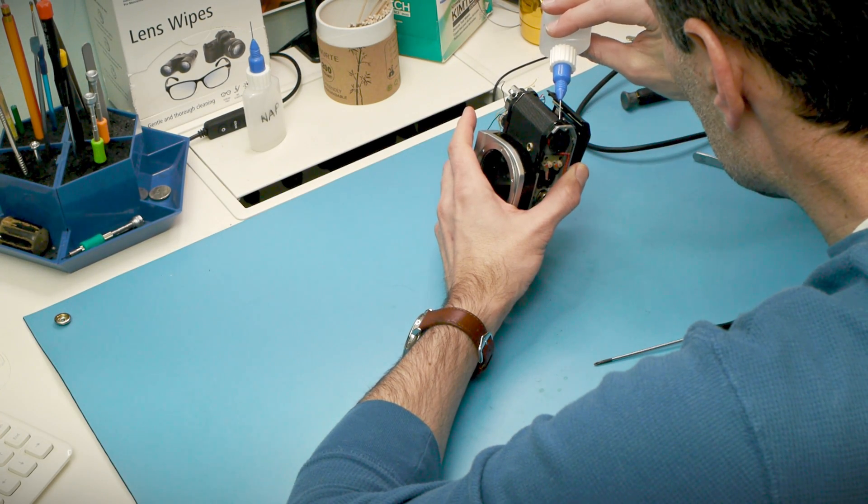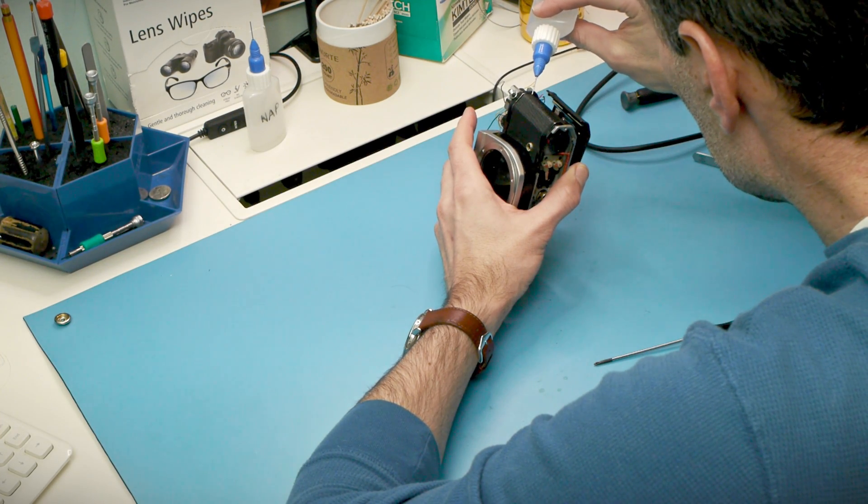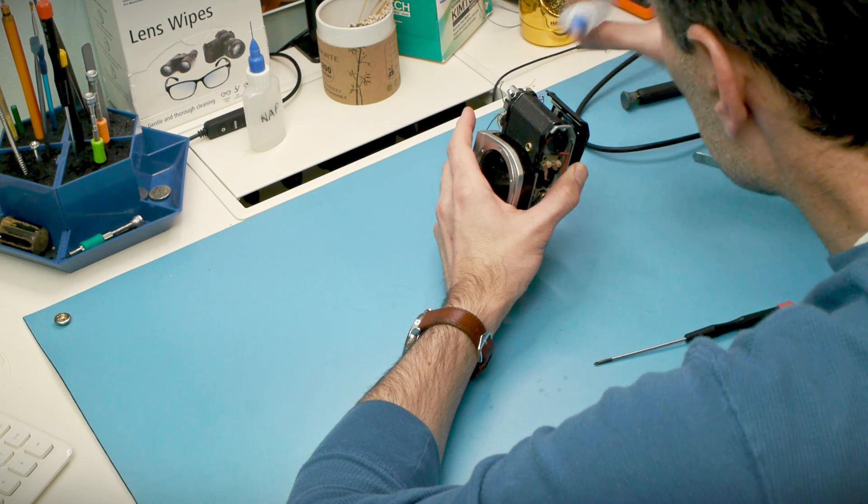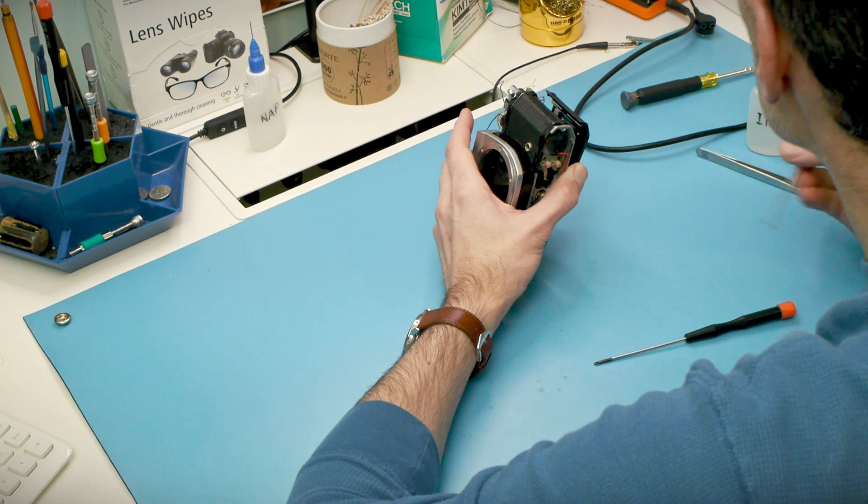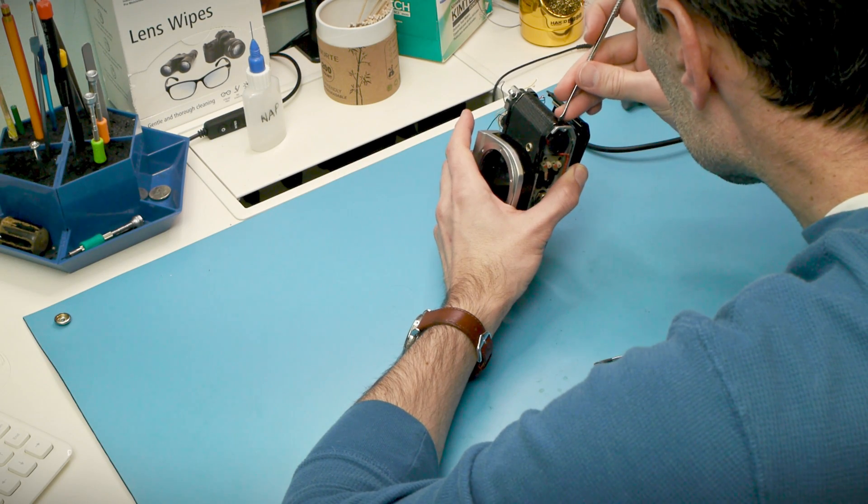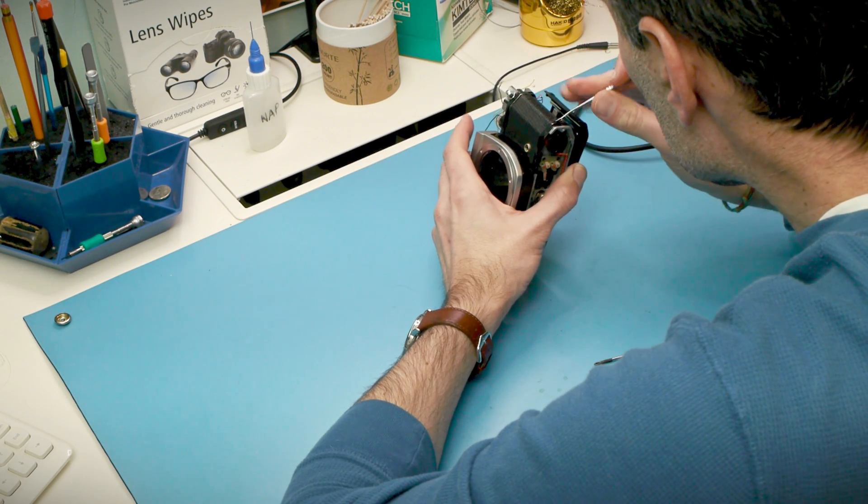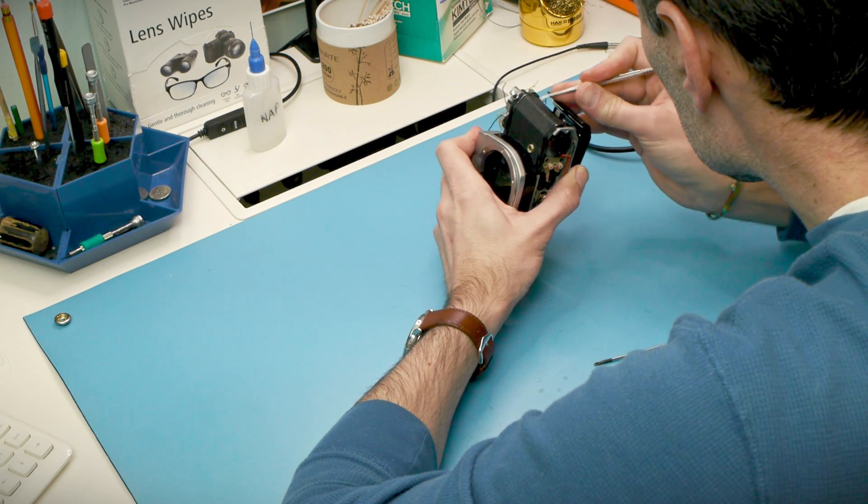When I first started repairing cameras I was really intimidated by this step in particular. Screwing and unscrewing stuff? No problem. Soldering and unsoldering? Fine. But removing decorative coverings seemed extreme like I was making a permanent change to the camera that might not easily be undone. But once I actually did it a couple times I quickly got over that mental block.